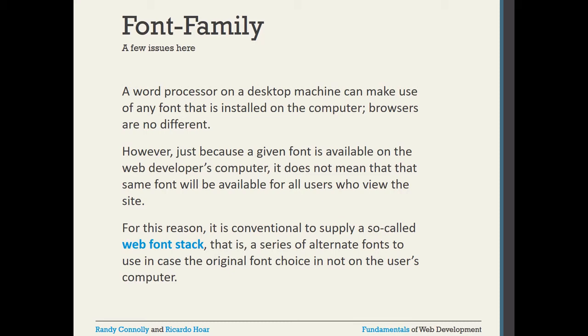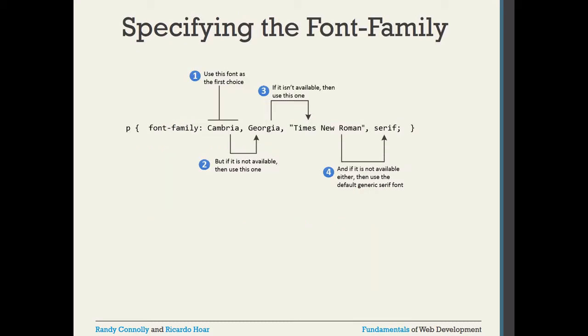For that purpose, another option is called the web font stack, where a series of alternative fonts are used in case the original font choice is not on the user's computer. For example, in CSS for a paragraph font-family, the first option might be Cambria. If that font is not there, it will go to the second one, Georgia. If that is not there, the third option is Times New Roman. If that is also not there, by default the generic serif font will be used.